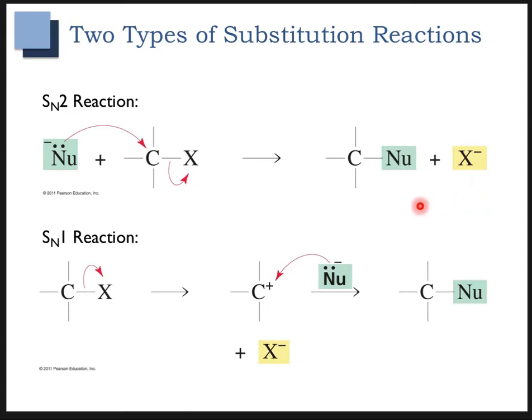The SN1 substitution reaction is shown in the bottom here, and you can see that it's a little bit different. The overall outcome is the same in that the nucleophile replaces the leaving group, so you can see that the product is often the same.